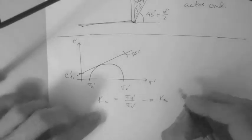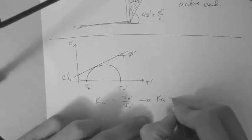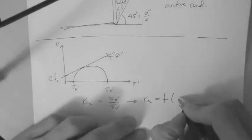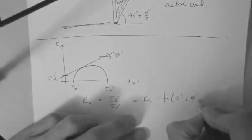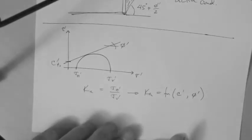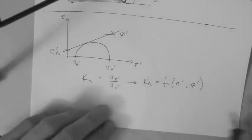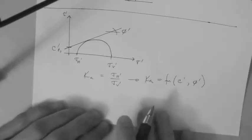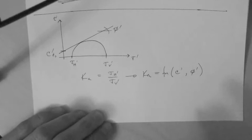In this case, Ka is a function of C prime and also phi prime. It's a more involved equation, a little bit longer, and I will give that to you later on.